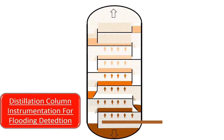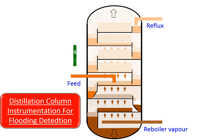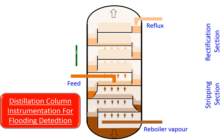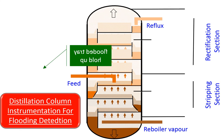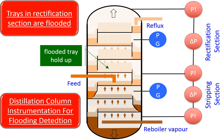This figure illustrates a distillation column where flooding is occurring above the feed tray. The liquid holdup in the trays above the feed has increased, causing the pressure drop to increase above the feed tray. This can be observed from the differential pressure transmitter in the rectification section.